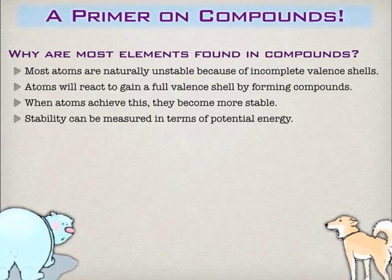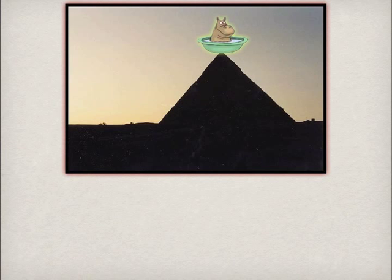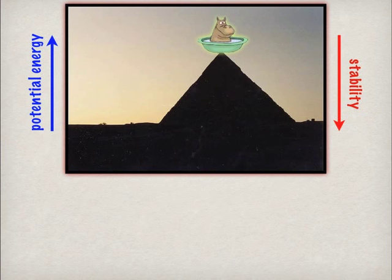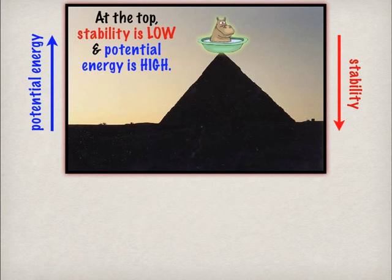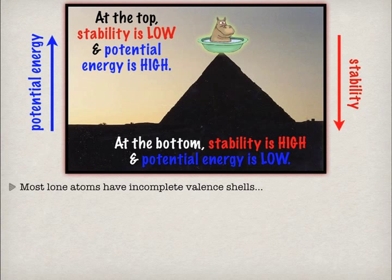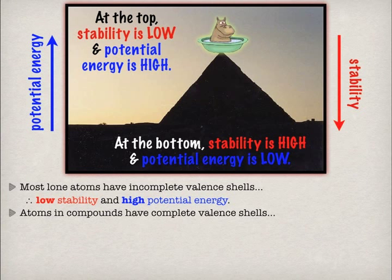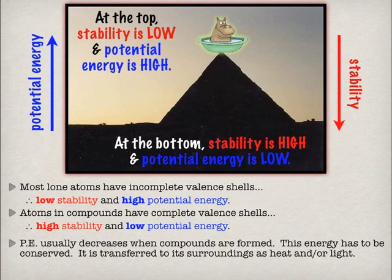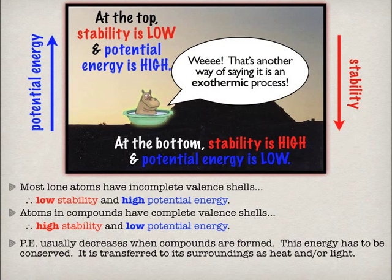We can measure stability in terms of potential energy, and a great analogy is an actual hill. Pretend you had a hippo in a bathtub on top of a hill — up at the top you'd have a lot of potential energy but very little stability. As the hippo went down the hill, stability goes up and potential energy goes down. Lone atoms with incomplete valence shells are at the top of the mountain, and when they make compounds they go to the bottom. Most of the time when things form compounds it's an exothermic reaction, releasing heat and light — that's the potential energy stored in the bonds being released as a more stable compound forms.